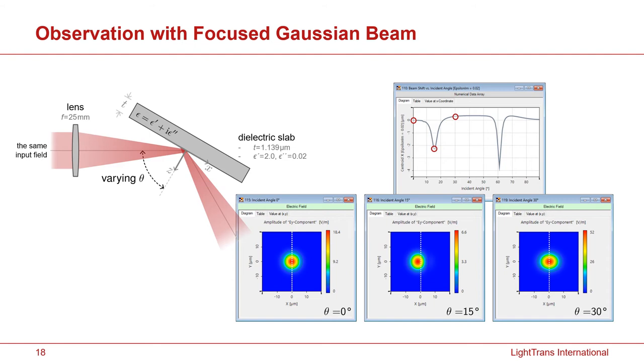In contrast to the previous case where we use a collimated Gaussian beam, in this case we introduce a focusing lens. And we make a small focused Gaussian on the front surface of the dielectric slab. In this way, we'd like to even visualize the very small Goos-Hänchen shift.